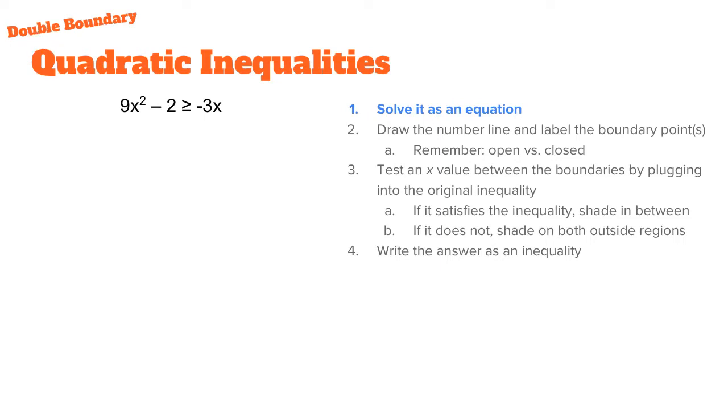The first step, as with many steps with solving our inequalities, especially the double boundary ones by hand, is that you want to solve it as an equation first. So this greater than or equal to is going to turn into just an equal sign.